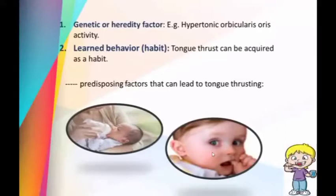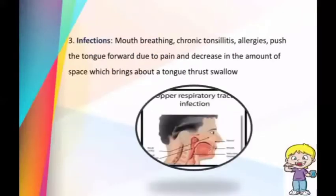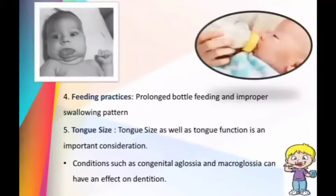Regarding infection, certain upper respiratory tract infections such as mouth breathing, chronic tonsillitis, or allergies push the tongue forward due to pain and decreased space, bringing about the tongue thrust swallow. It may also be present due to any physiological need to maintain an adequate airway. Regarding feeding practices, prolonged bottle feeding and improper swallowing pattern have been attributed as etiological factors of tongue thrusting. Tongue size and function are also important considerations — conditions such as congenital macroglossia may turn into the tongue thrusting habit.